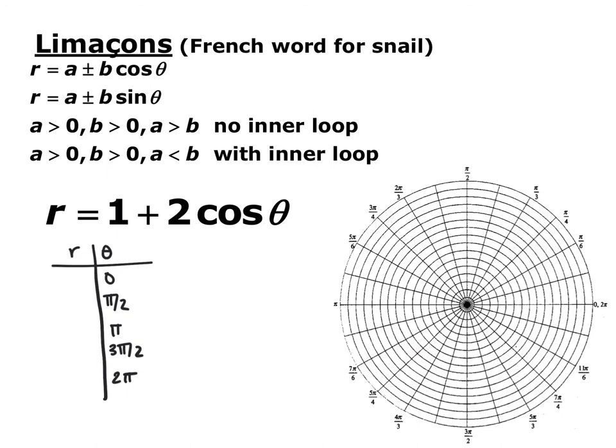The next special polar equations are limaçons — the French word for snail. They take the form r equals a plus or minus b cosine theta, or r equals a plus or minus b sine theta, where a and b are both positive and not equal to each other. If a is greater than b, there is no inner loop. If a is less than b, there is an inner loop.